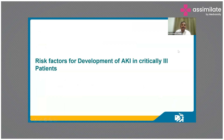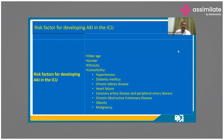What are the risk factors for development of AKI in critically ill patients? There are both modifiable and non-modifiable risk factors. The non-modifiable risk factors include age, gender, and ethnicity. Age over 60 years is significant — these patients have an increased propensity to develop kidney injury with minimal insult.